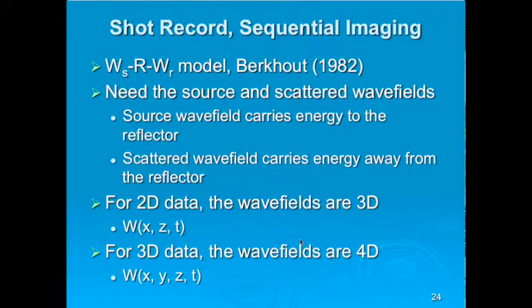This WSRWR model is due to Berkhout back in 1982. The key dependencies are: whether the wave fields include Q, what the bandwidth is, how velocity affects it, and whether there's additional scattering. We need a source wave field to carry energy to the reflector, and a scattered wave field to carry energy away from the reflector. Sava and Hill's tutorial doesn't specify how we should do this reconstruction — there are many ways.